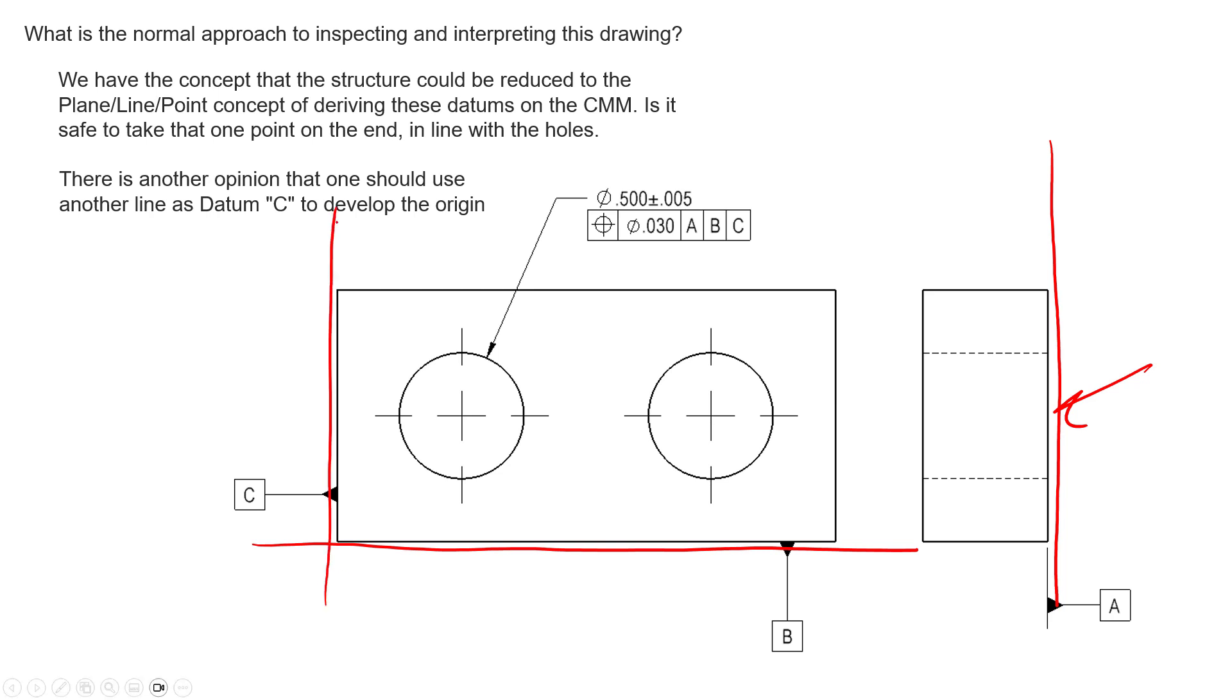We see datum feature B identified as this bottom surface and datum feature C as this side surface. The question was: we can create a plane with three points, and this third one's in and out of the page. Three points will establish a plane on that surface, then two points will establish a line for datum B.